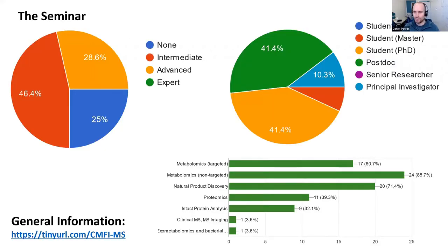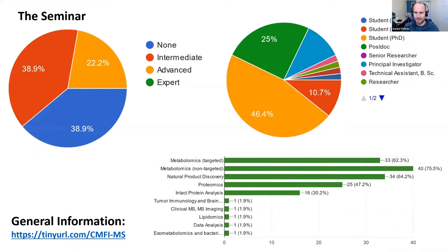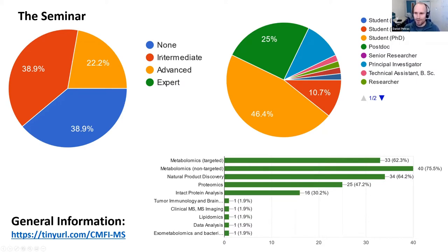It's also great when you sign up because we get some background information. After last time more people signed up, so we updated the background and got a more diverse picture of the different participant levels. It's great to see that a lot of students at different levels are joining — a nice mixture with people with no experience to intermediate and some advanced knowledge. The particular interests in the fields have remained stable, so we will probably focus on metabolomics and also a little bit on proteomics and protein mass spectrometry.